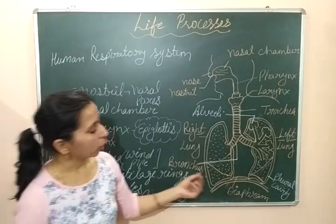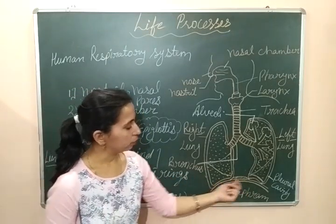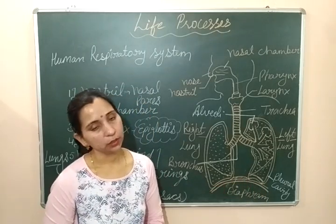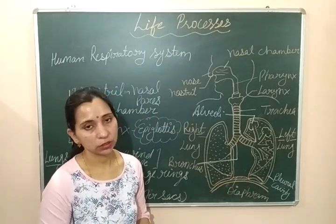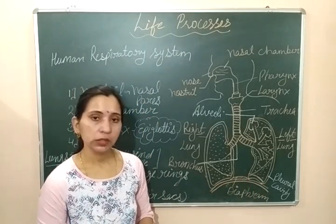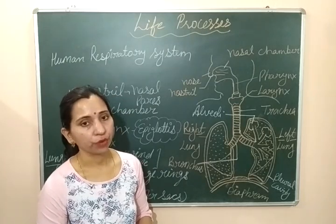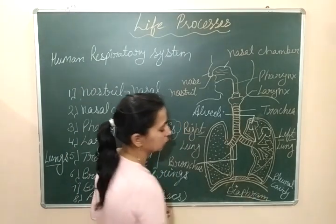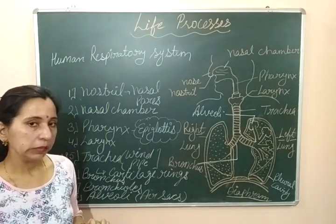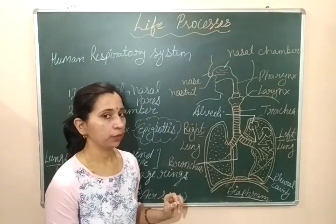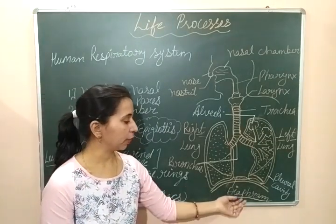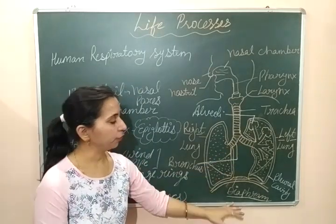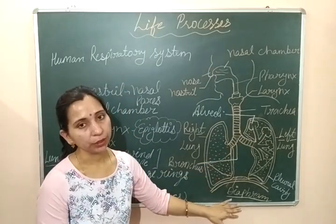There is one more structure visible here — a thin muscular sheet-like structure known as the diaphragm. This thin muscular structure is known as the diaphragm. The diaphragm helps in the breathing process and it separates the thoracic cavity from the abdominal cavity.